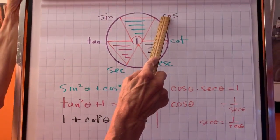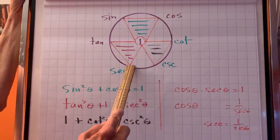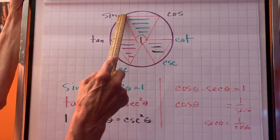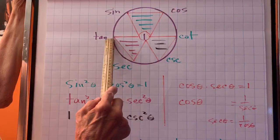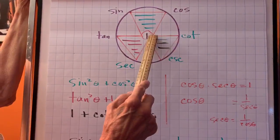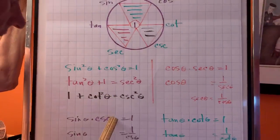Cosine times secant equals one. Sine times cosecant equals one. Tangent times cotangent equals one. So I have it down over here.